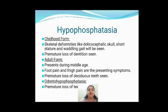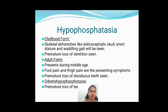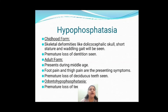In odonto hypophosphatasia, the individual is going to be perfectly normal except for premature loss of teeth. To summarize hypophosphatasia: there is deficiency of TNSALP — tissue nonspecific alkaline phosphatase — and there are five types: perinatal, infantile, childhood, adult, and odonto hypophosphatasia.